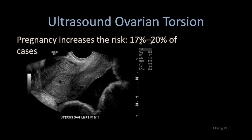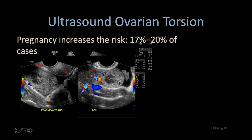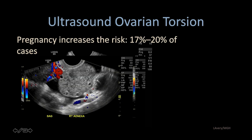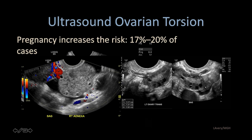Pregnancy increases the risk of ovarian torsion — sometimes we see these cases on MRI when evaluating for appendicitis. Here on ultrasound we see a small gestational sac, a large volume of simple serous fluid within the cul-de-sac posteriorly, and the ovary enlarged with multiple peripheral follicles, a dominant follicle, and no blood flow. Another view shows the enlarged ovary with heterogeneous central stroma and multiple small follicles — this is ovarian torsion in the setting of pregnancy. The normal contralateral ovary is smaller with homogeneous central stroma and small follicles.